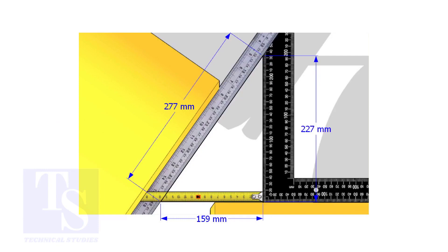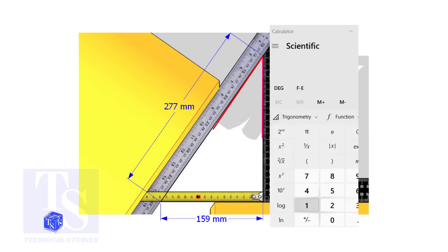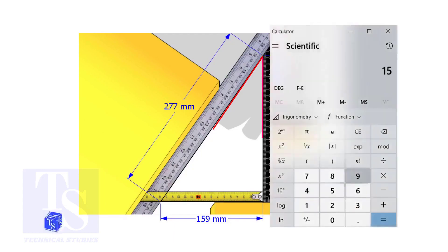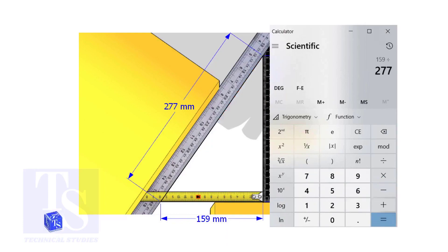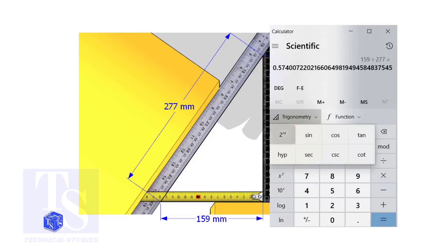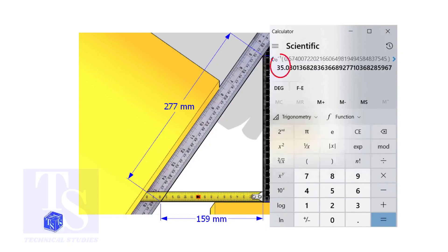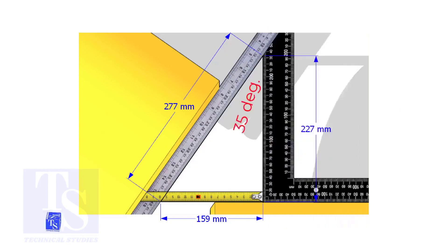Let us calculate the included angle. If you apply the sine rule, the angle will be: 159 divided by 277, then shift sine. The answer is 35 degrees.